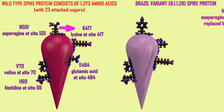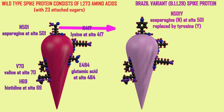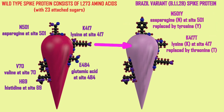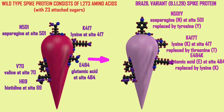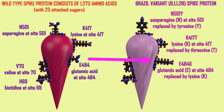A variant first identified in Brazil, but now also known to exist in the United States and other parts of the world, shares two of the changes of the South African variant: the asparagine to tyrosine change at site 501, and the glutamic acid to lysine change at site 484. But at site 417, the lysine in the wild-type strain is replaced by threonine.